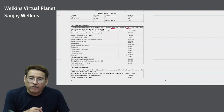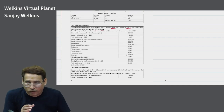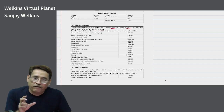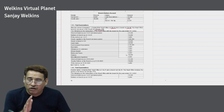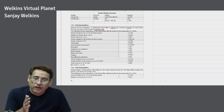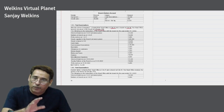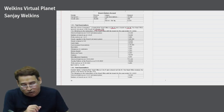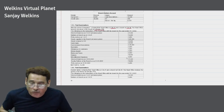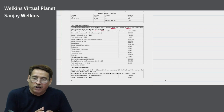Irrespective of whether the rate is based on cost or invoice price, the items below — opening stock, goods sent to branch, goods in transit, goods returned, and closing stock — will all be considered at invoice price only, unless specifically stated otherwise.